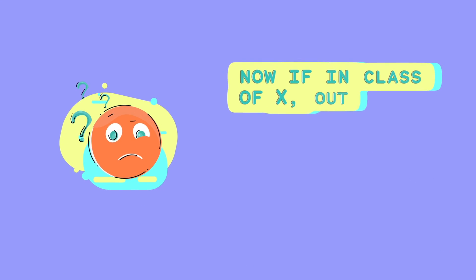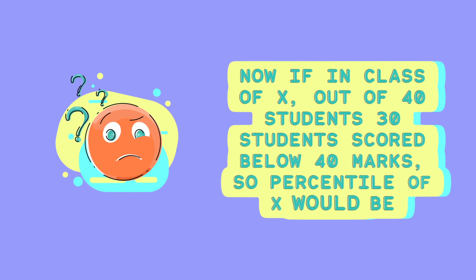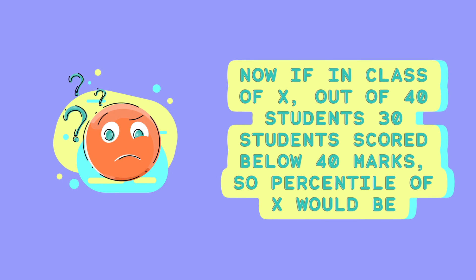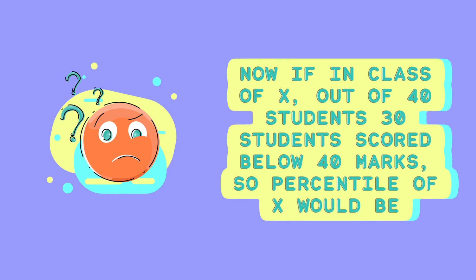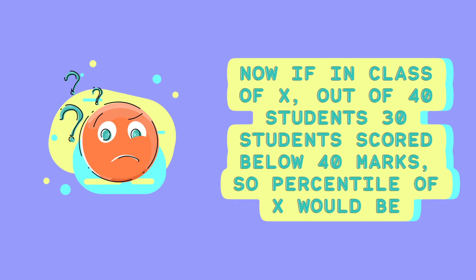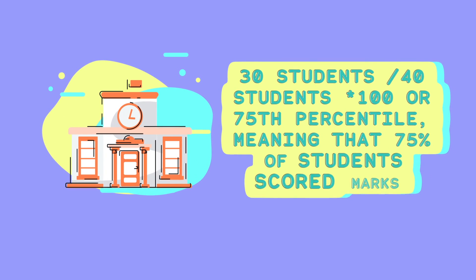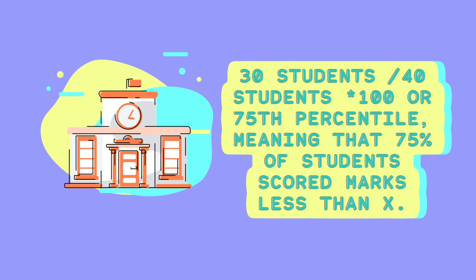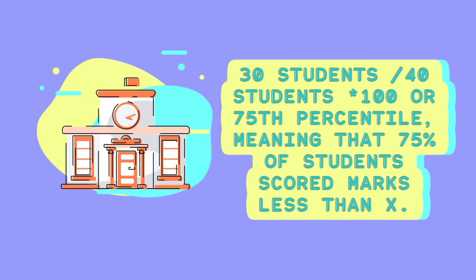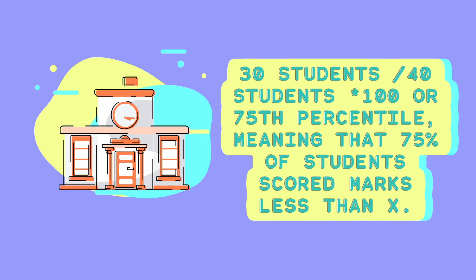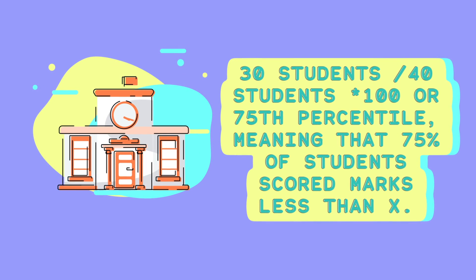Now, if in the class of X, out of 40 students, 30 students scored below 40 marks — that is the marks obtained by X — the percentile of X would be 30 students divided by 40 students, multiplied by 100. That is, X has the 75th percentile, meaning that 75% of students scored marks less than X.